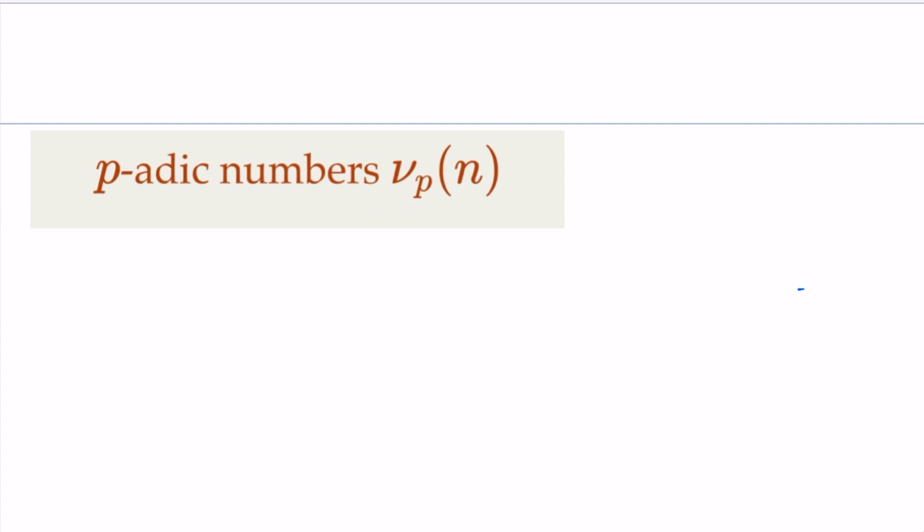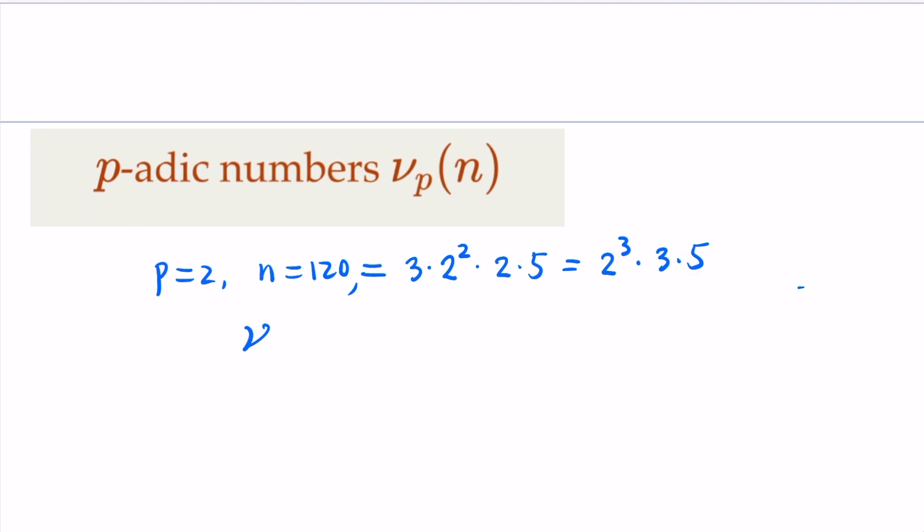So for example, let's say p equals 2 and n equals 120. So what is that? 120, we try to factor that into primes. That's going to be equal to 12, that is 3 times 4, and 10 is 2 times 5. So that is 2 to the third power times 3 times 5. So ν_2(120), in this case, we use the power that is 3, so it equals 3.